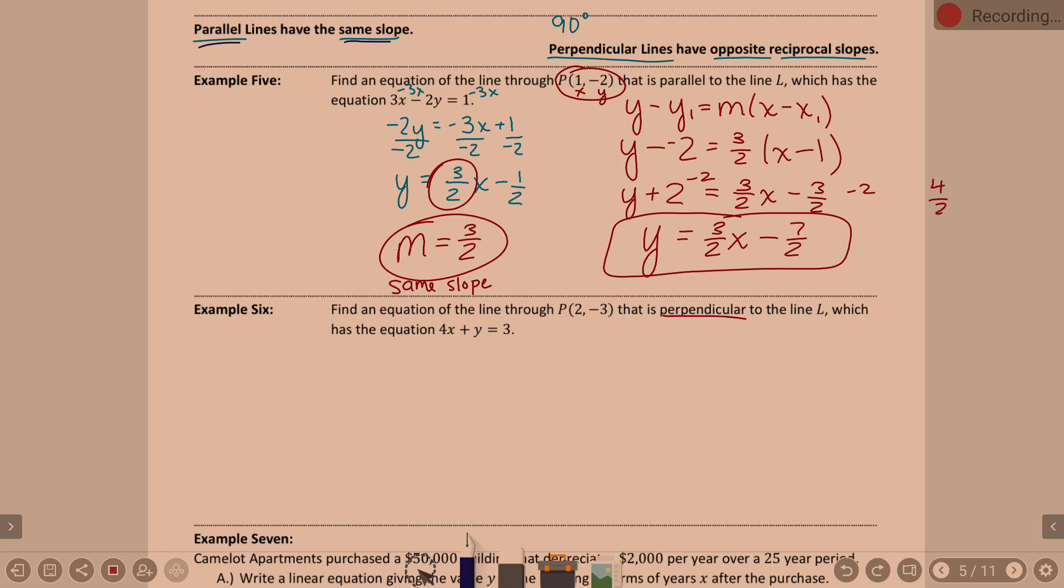Now, this one down here – find the equation of the line through (2, -3) that is perpendicular to the given line, which has the equation 4x + y = 3. So in order to find an equation perpendicular, we have to know the slope of this line.